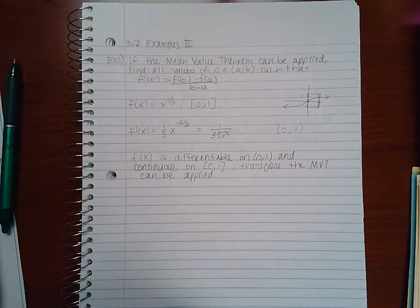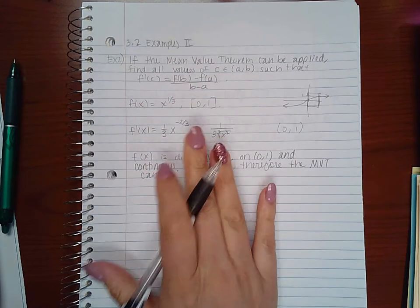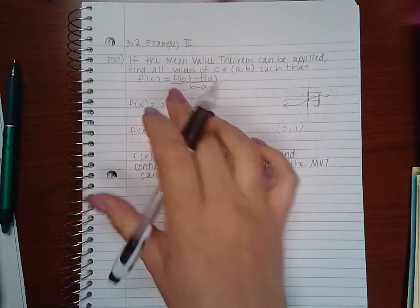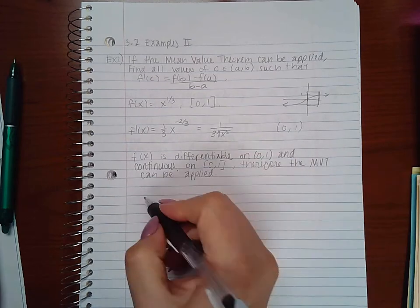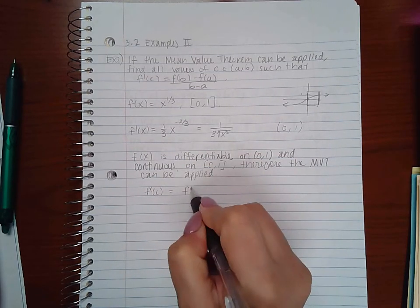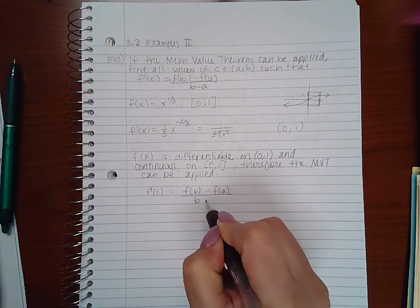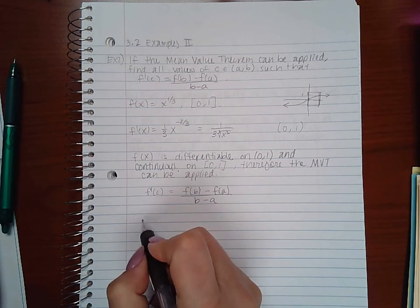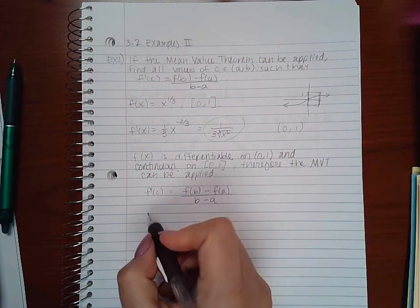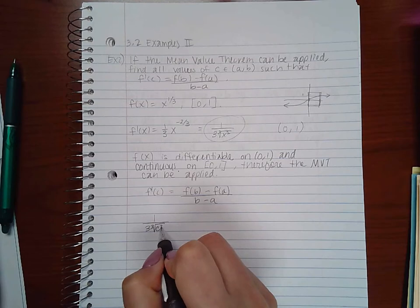Now if I want to find the c value that the Mean Value Theorem guarantees exists, then I need to find this out. So f'(x) - I'm just going to write the formula here and then plug in all the values. f'(c) would be if I plugged c into this function, so I'm just going to plug in a c there.